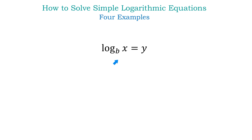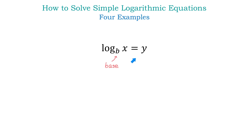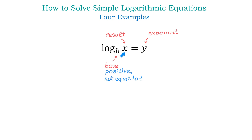A logarithm is the exponent to which the base b must be raised to obtain the result x. In the equation log base b of x equals y, b represents the base, y represents the exponent, and x represents the result. It is important to remember that in a logarithm, the base has to be positive and not equal to 1, and the result has to be positive.